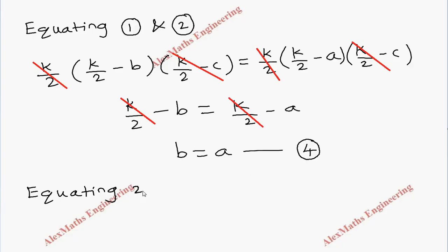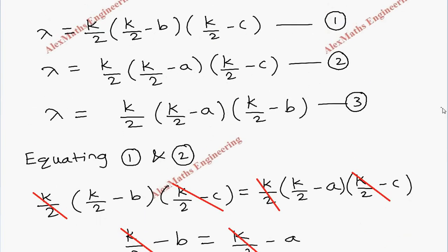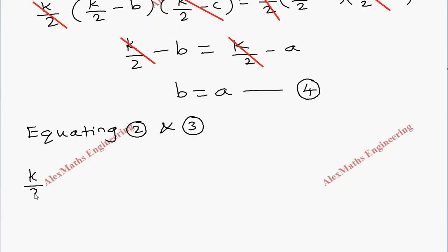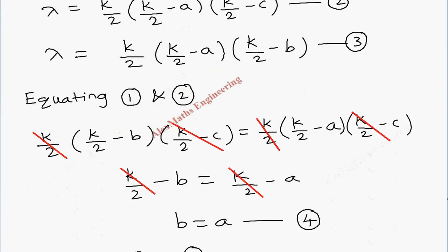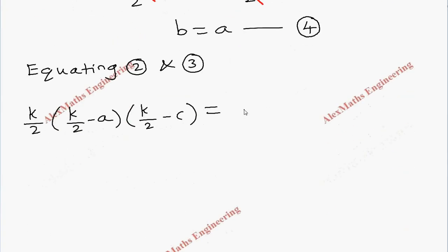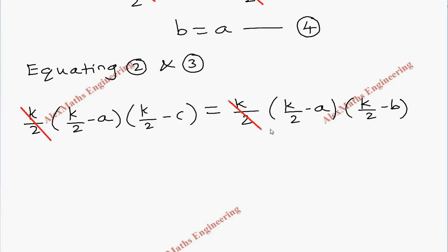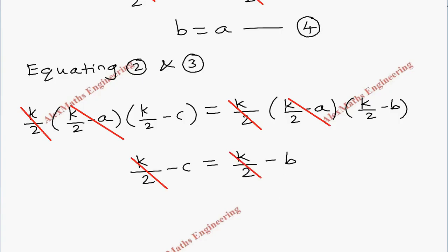Equating equations 2 and 3: (K/2)(K/2 minus A)(K/2 minus C) equals (K/2)(K/2 minus A)(K/2 minus B). Cancelling K/2 and (K/2 minus A) from both sides, we get K/2 minus C equals K/2 minus B. After cancelling K/2 and the minus signs, we get C equals B, or B equals C. This is equation 5.